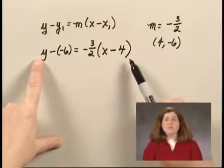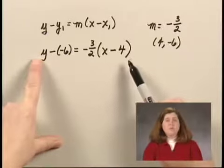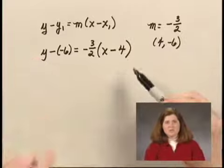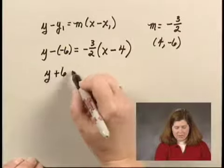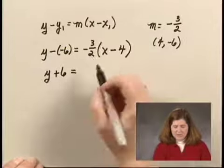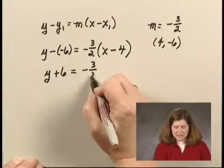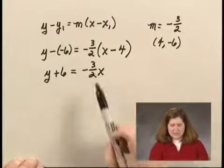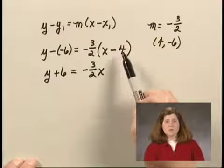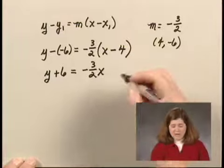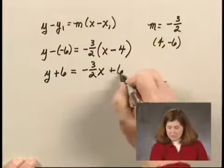This gives us an equation of the line. Typically, we write it in slope-intercept form, so let's solve for y. We have y + 6 equals -3/2 x. Now we multiply -3/2 times -4, which gives us 12/2, or plus 6.